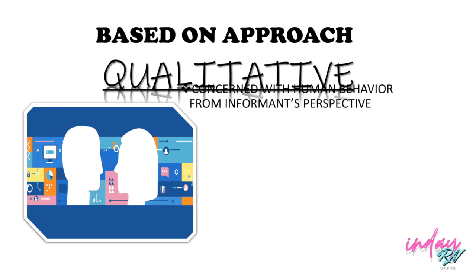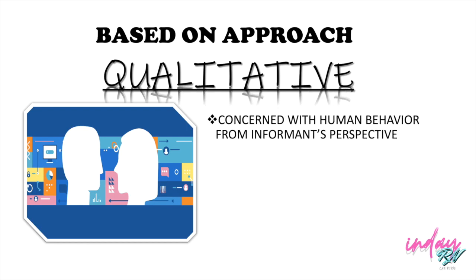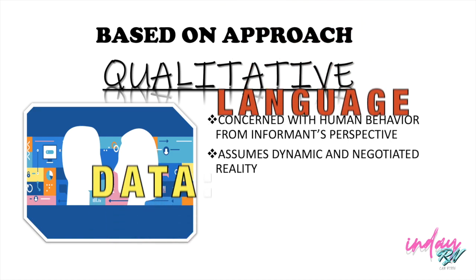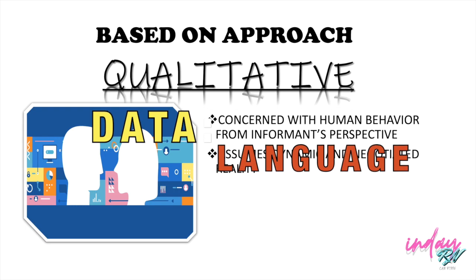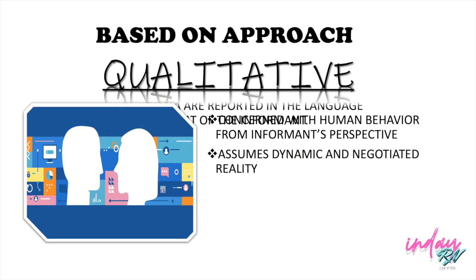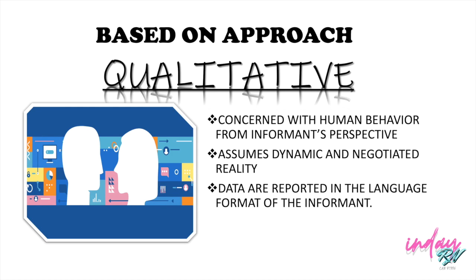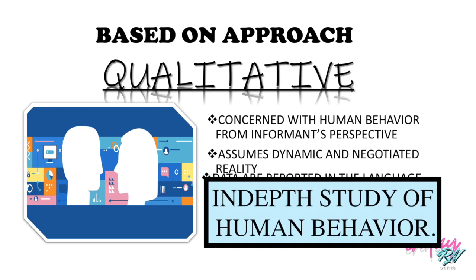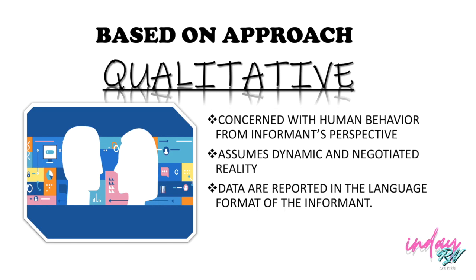The next one is Qualitative Approach. Here in the Qualitative Approach, it is concerned with human behavior from informants' perspective. That means we are going to collect information by language and it assumes dynamic and negotiated reality — the experiences of the participant. The data are reported in language format of the informant. There is an in-depth study of human behavior in a descriptive form of data collection. In Qualitative Approach, it's an explanation in words.